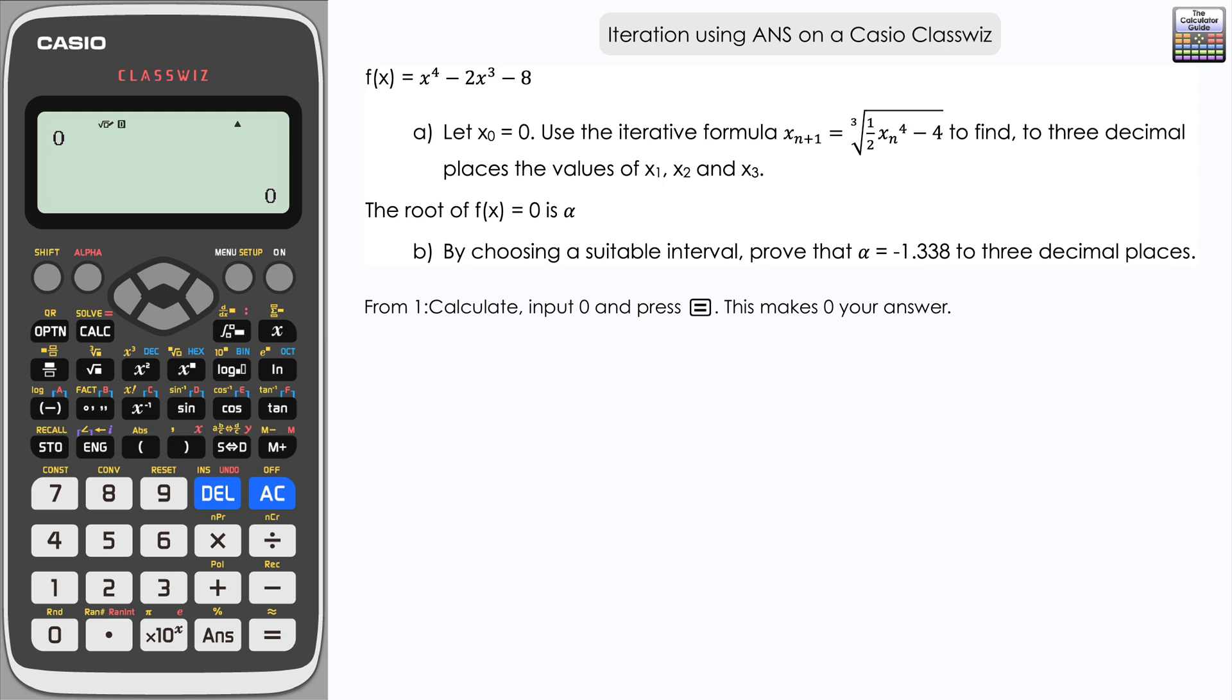What we're going to do is input the iterative formula, but where we have xn, we're going to replace that with ANS. So we need to do this very carefully: shift and cube root, then one-half (you can input 0.5 as well if you find that more convenient), and then we want ANS in place of xn.